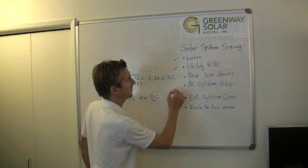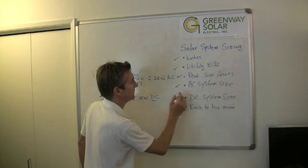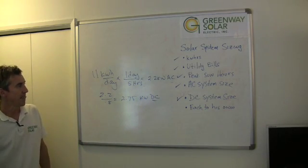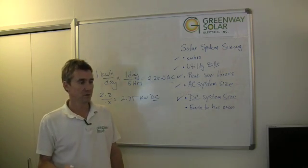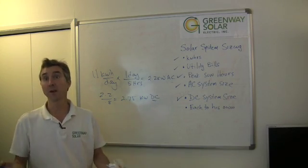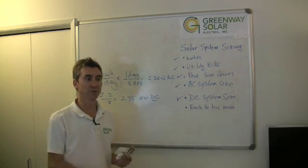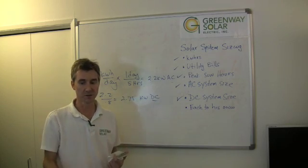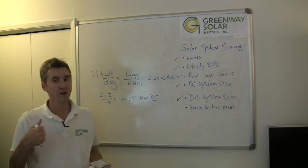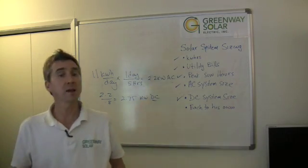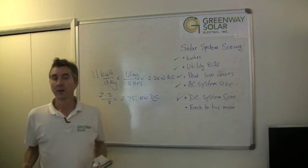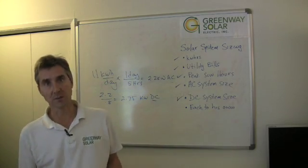All righty. So we've covered kilowatt hours, utility bills, peak sun hours, AC system, and DC system sizing. Now I write 'each to his own' here. Not every customer wants to offset all of their power. They might not have a big enough roof to put a 9.75 kilowatt system that we just discussed a minute ago on their roof. So they might be limited just by the area available on their roof. Another situation might be a person just doesn't have the budget for a 9.75 kilowatt system. They might have 20 grand aside and that's going to dictate the size of system that they have.